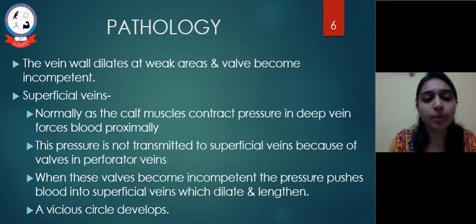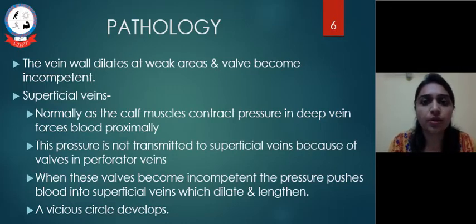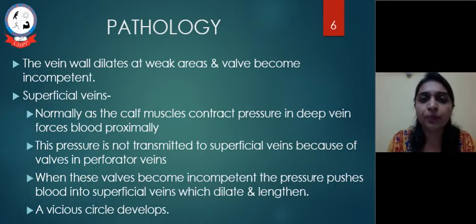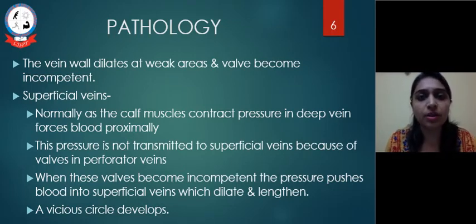Normally, due to valves in the perforator vein, blood moves from superficial to deep vein only. But if there is incompetency in the perforating valves, blood from the deep vein goes back into the superficial vein. A vicious circle develops — blood going backward in the superficial vein creates pooling, making veins more dilated, and the valves in the superficial vein also become incompetent, causing disease progression.